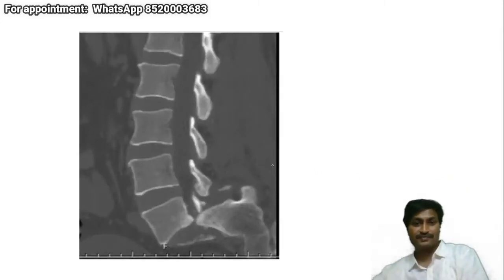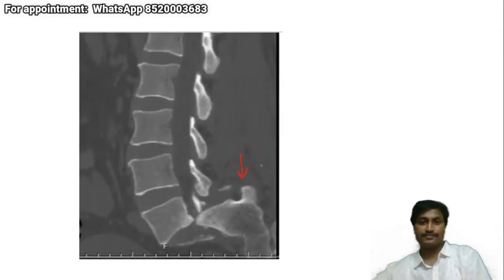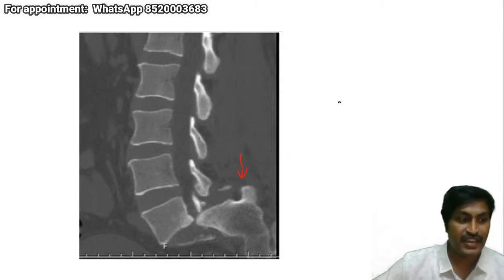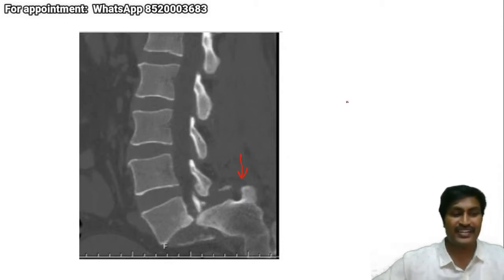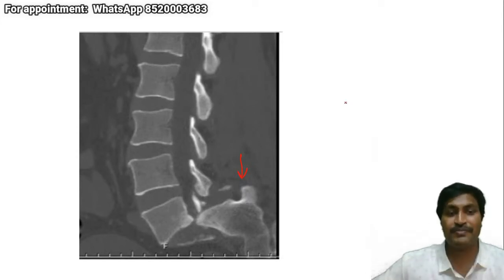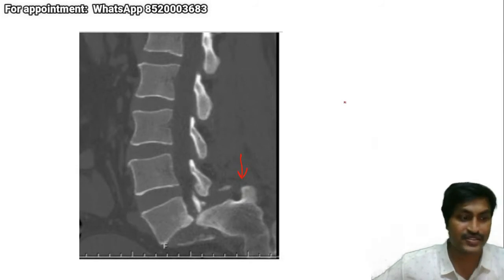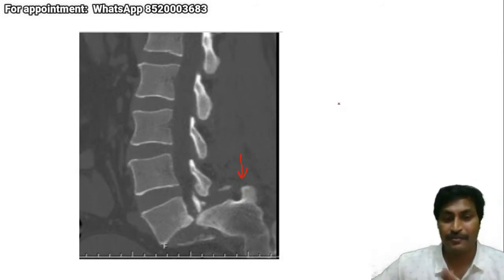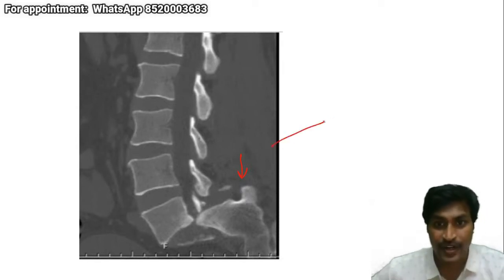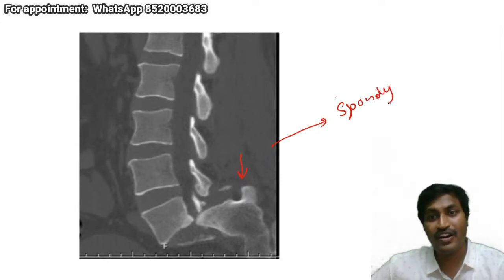What has happened here? You can either say spondylolisthesis grade one or grade two — that's an intermediate visual impression. It's mainly dependent on patient symptoms. But grade three and grade four and spondyloptosis — that is grade five — all of them will definitely require surgery.